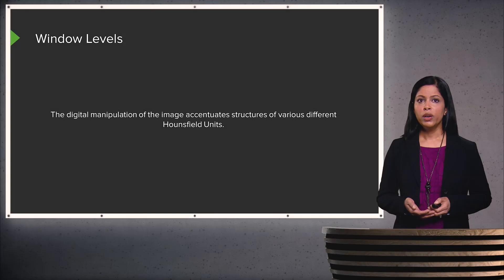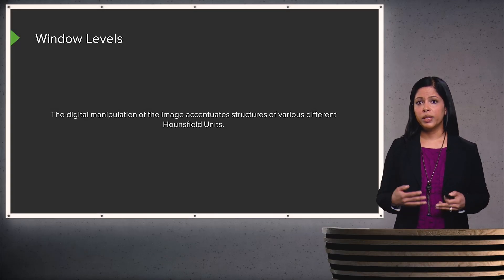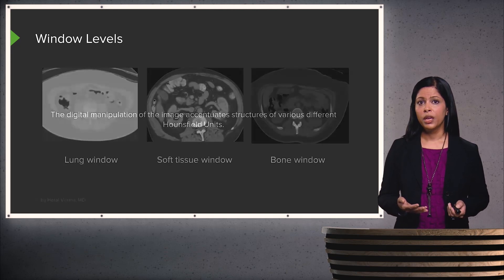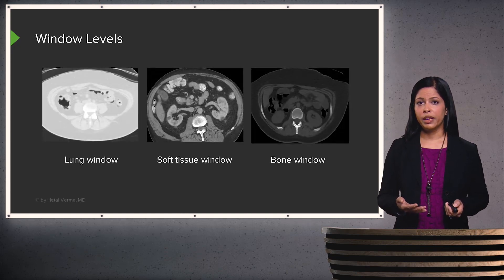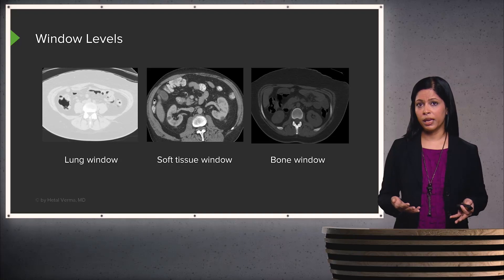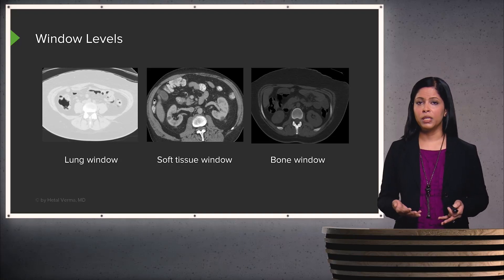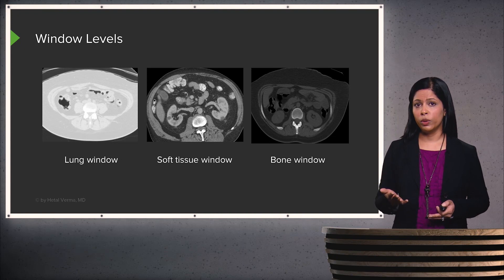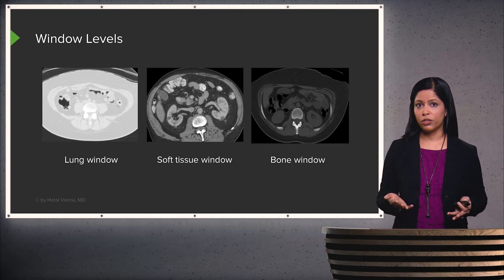Window levels are digital manipulation of the image that help you accentuate structures of various different Hounsfield units. Window levels can be changed by the radiologist as a post-processing mechanism after the CT scan is obtained. The CT scan is obtained in only one type of window, and then everything else can be adjusted afterwards.